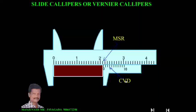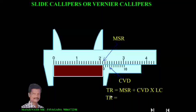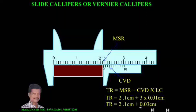By knowing the main scale reading and CVD, we can find the length of this object using the formula: Total Reading (TR) = MSR + (CVD × Least Count). So TR = 2.1 cm + (3 × 0.01 cm) = 2.1 cm + 0.03 cm = 2.13 cm. This is how we measure the length of an object using the two lower jaws.